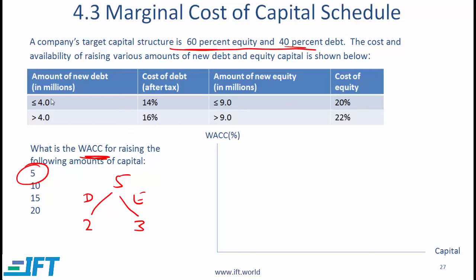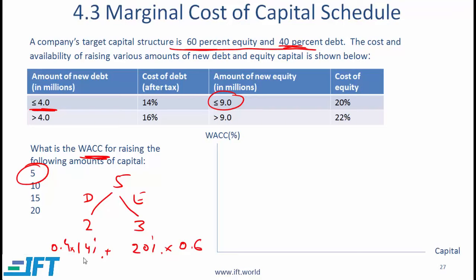Notice that the debt of $2 million is less than the $4 million cutoff, so the cost of debt is 14%. The equity of $3 million is also less than the $9 million cutoff, so the cost of equity is 20%. Going back to our WACC formula, the weight of debt is 40%, so we have 14% × 0.4 plus 20% × 0.6. We are not applying (1−t) because we are given the after-tax cost of debt.